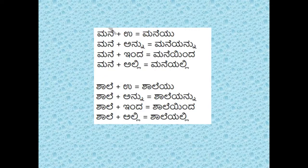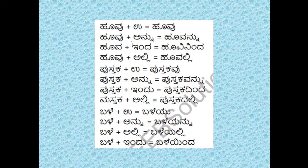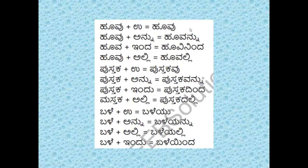Some more examples: mane plus — only the first four are shown, you can try adding the remaining ones as an exercise. For avanu (he/who): avanu, avanannu, avaninda — Pratama and Dvitiya are there, called katru and karma. For pustaka: pustaka, pustakavannnu, pustakadinda — these will appear in day-to-day sentences in your textbook. Read something in Kannada every day so you become familiar with this.